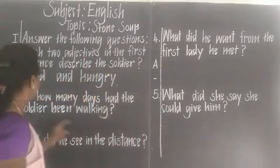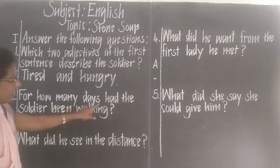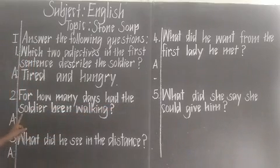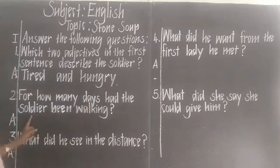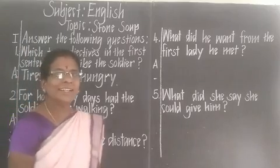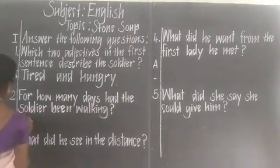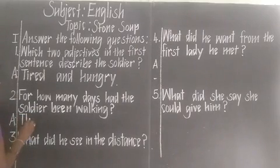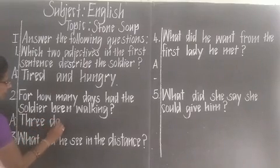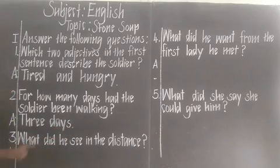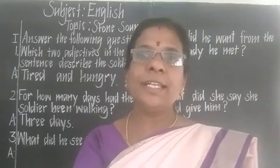Next, go to the second question. For how many days had the soldier been walking? How many days? Three days. T-H-R-E-E, three. D-A-Y-S, days. The soldier had been walking three days.